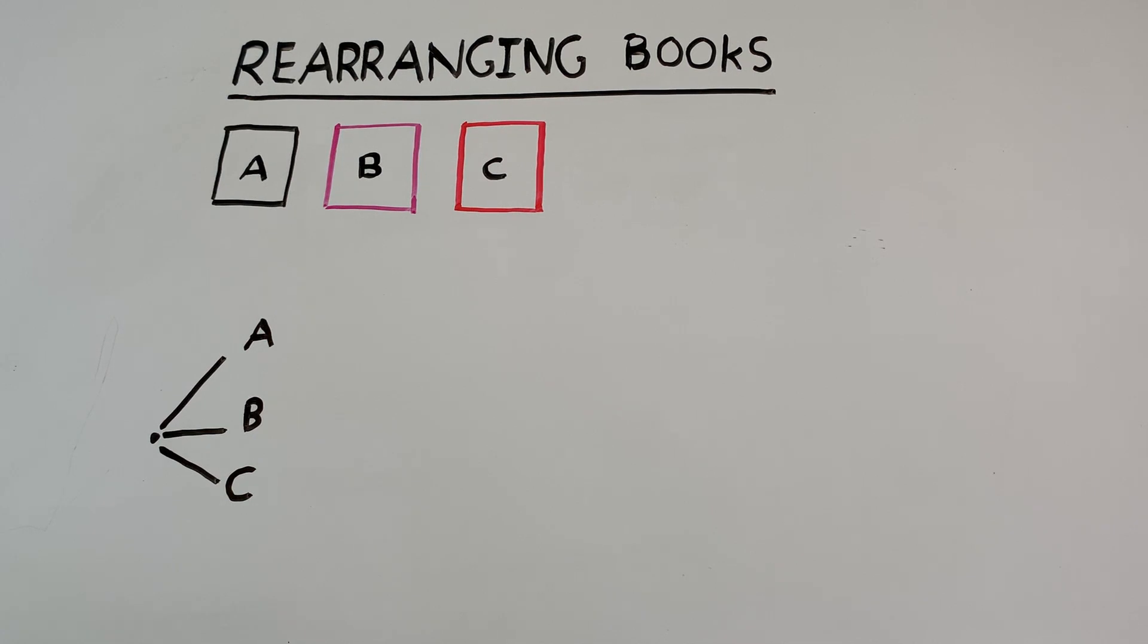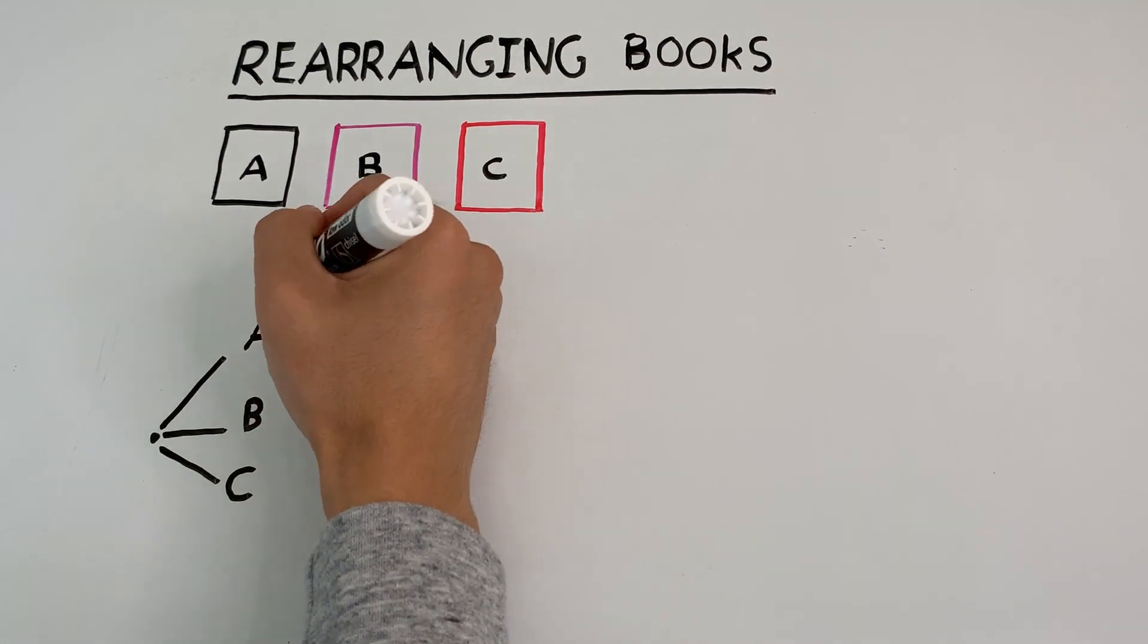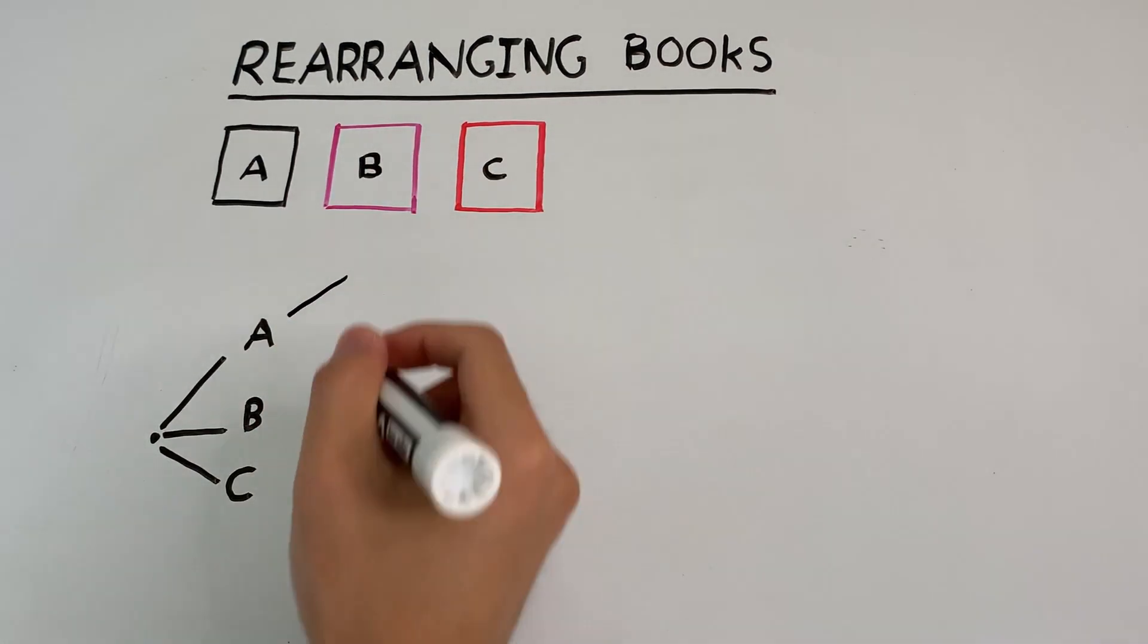Now from here, let's focus on book A. If book A was the first book placed on the shelf, then that leaves either book B or book C to be placed next. So our tree would branch off like this.